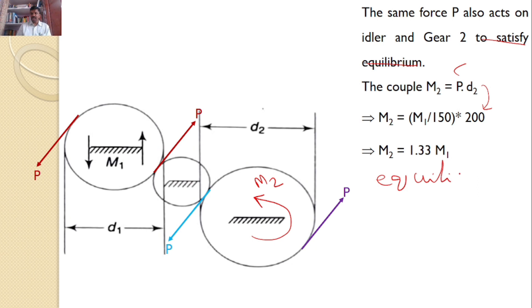The gear must satisfy the stationary condition. To counteract the rotating couple M₂ and satisfy equilibrium,